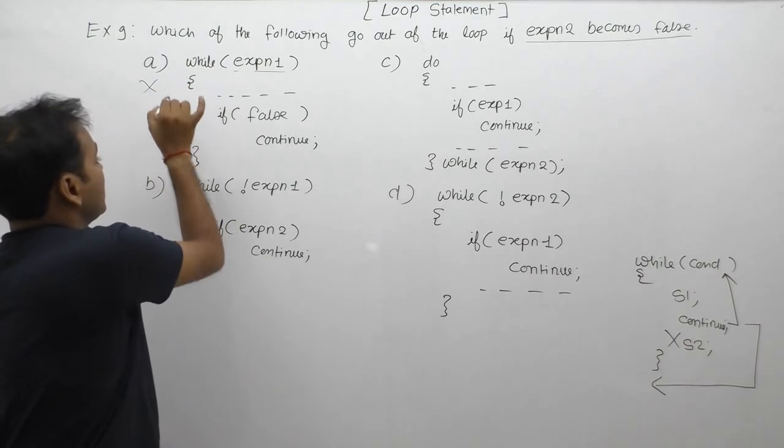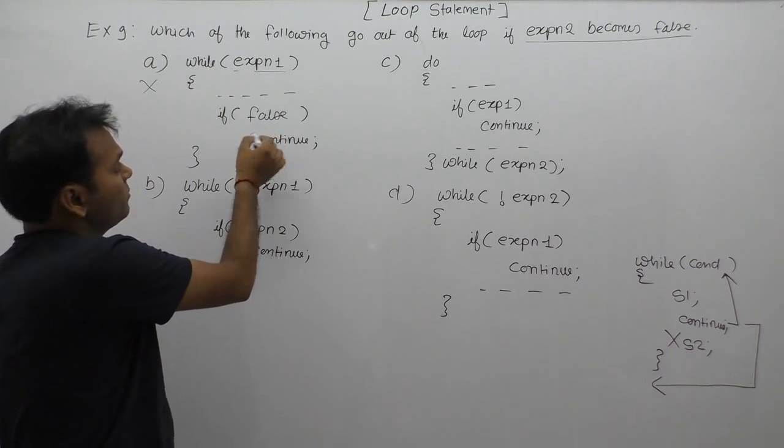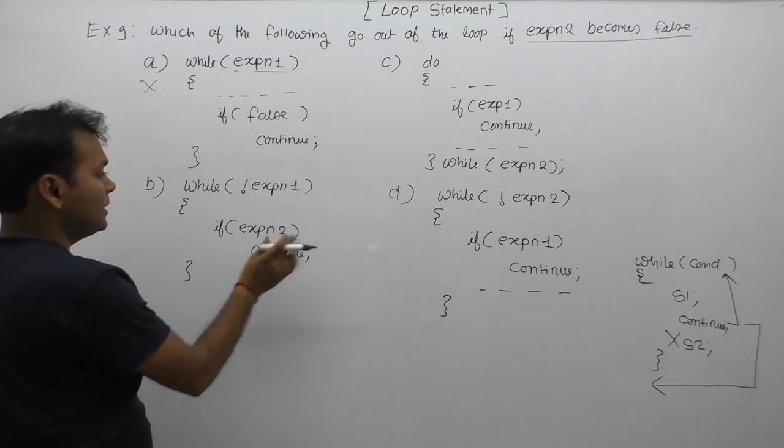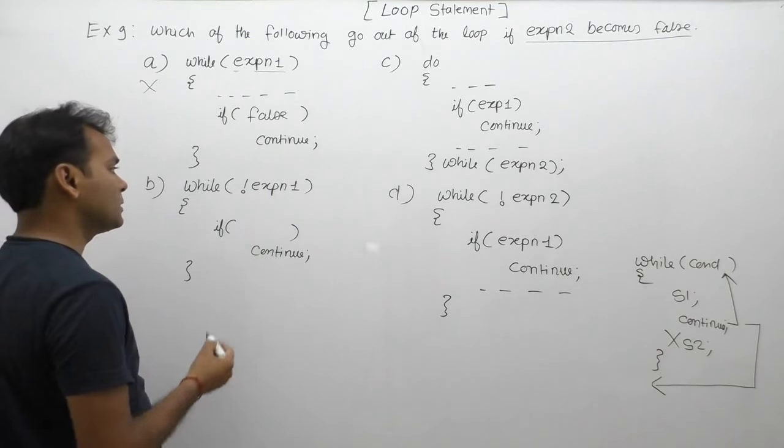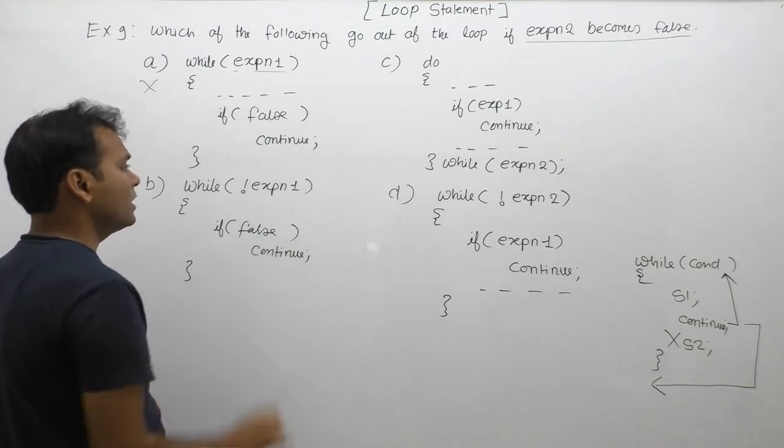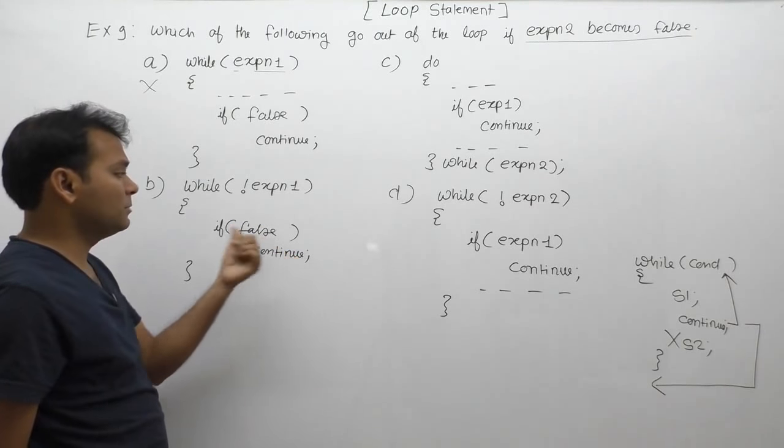Therefore, it is not correct. In this case, condition two, or sorry, expression two being false is the only case where my loop will not execute. The chance is the same as before. Expression one is true, expression two, in this case the loop behavior depends on expression two or expression one.